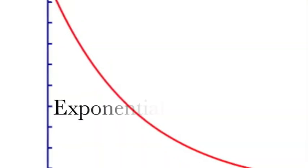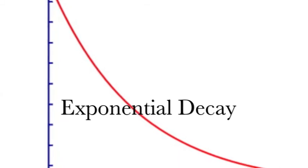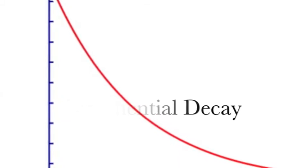Exponential decay is the exact opposite of growth. Decay means decrease, so it is the rate at which a number decreases.